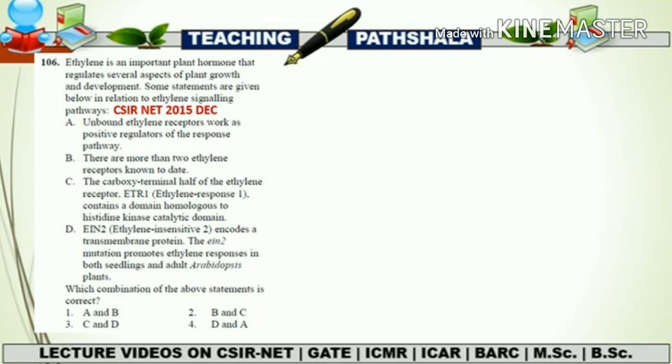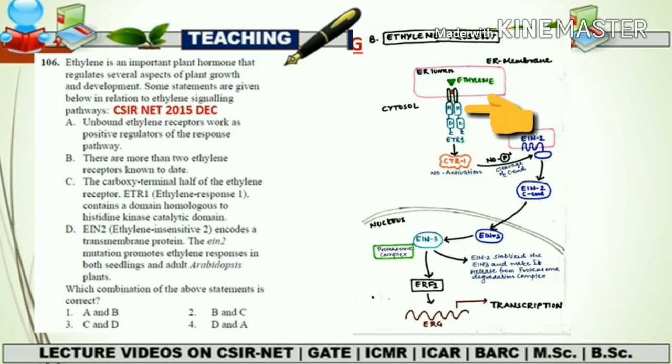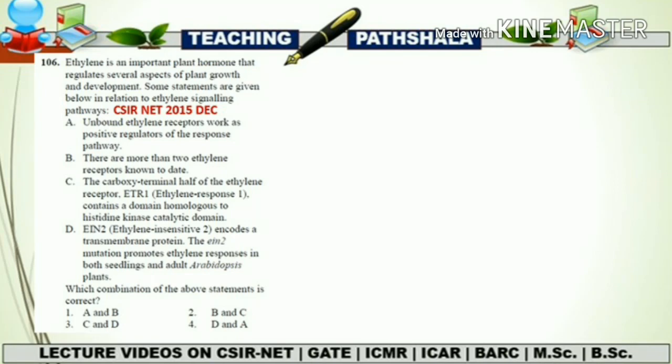Statement C says: the carboxyl-terminal half of the Ethylene Response receptor ETR1 contains a domain homologous to a histidine kinase catalytic domain. This is correct, because when studying the signaling pathway we saw the presence of a histidine kinase domain at the C-terminal of ETR1. This confirms that statement C is also true, and the second option contains the combination of B and C — so the correct answer is option number two.